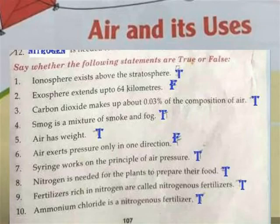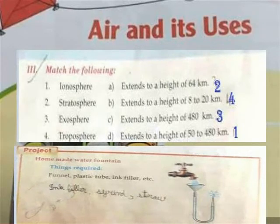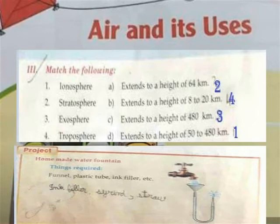Mark the following: The ionosphere extends to a height of 50 to 480 km. The stratosphere extends to a height of 64 km. The thermosphere extends to a height of 480 km. The troposphere extends to a height of 8 to 20 km. Form of water vapour — Troposphere. Requires a plastic tube or ink filler. The troposphere extends to a height of 10 km.